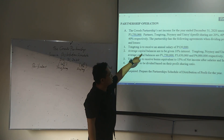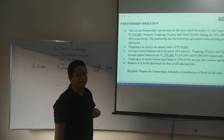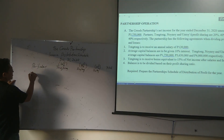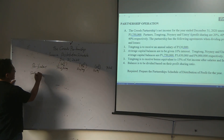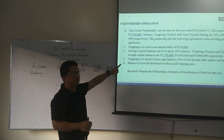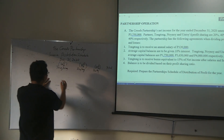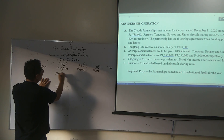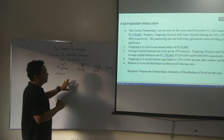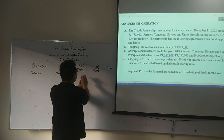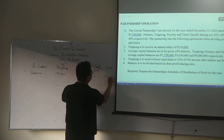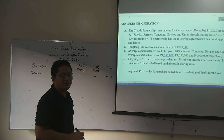Agreement 1: Tongtong is to receive an annual salary of 120,000. So for item number 1 — salaries — only Tongtong receives an annual salary of 120,000. We give the first 120,000 to Tongtong; Winoy and Ontoy receive none. Total for salaries: 120,000.